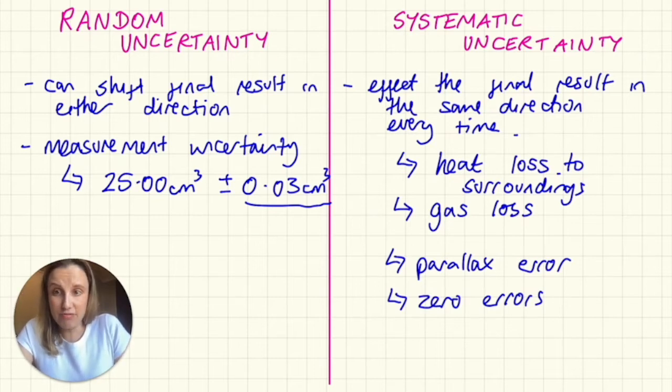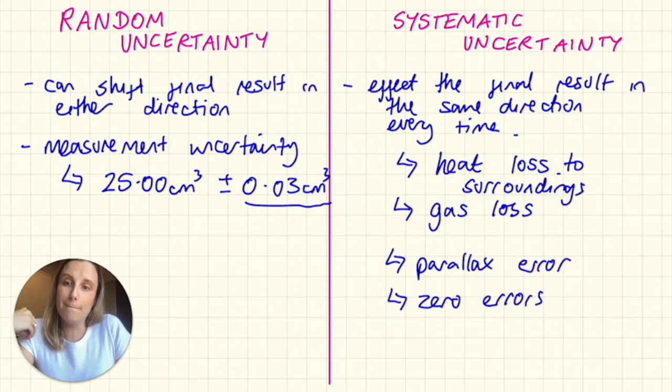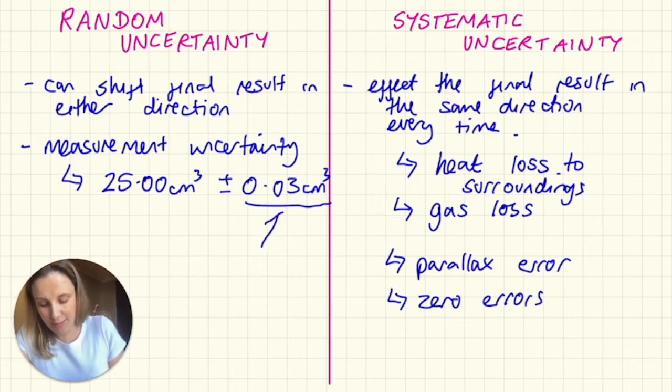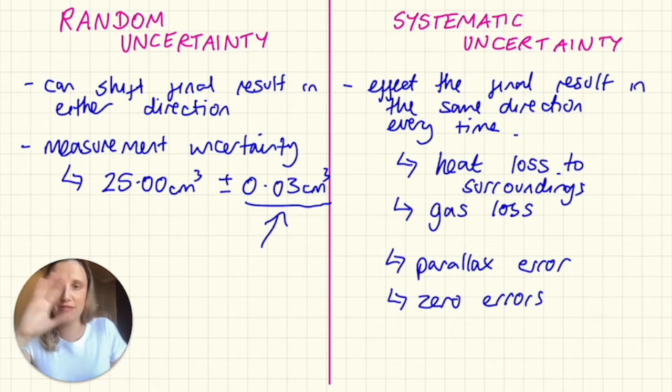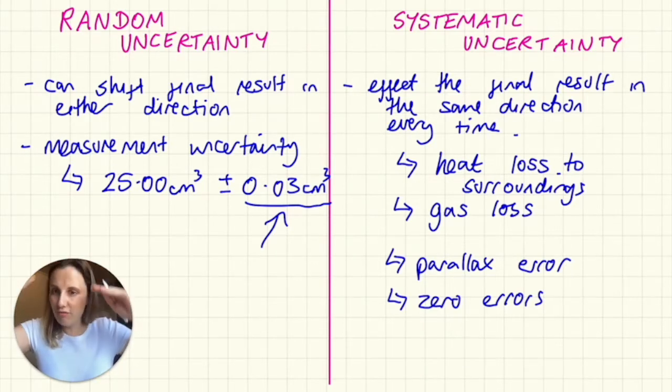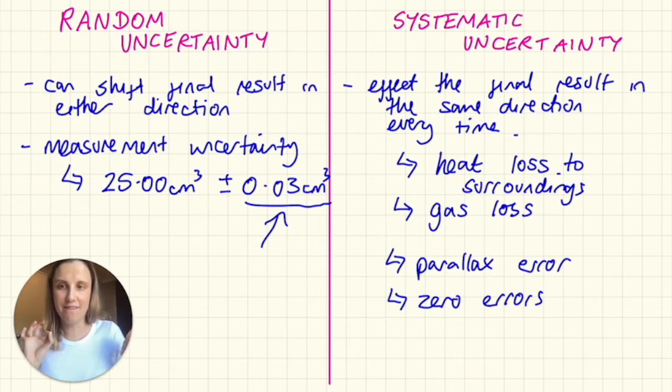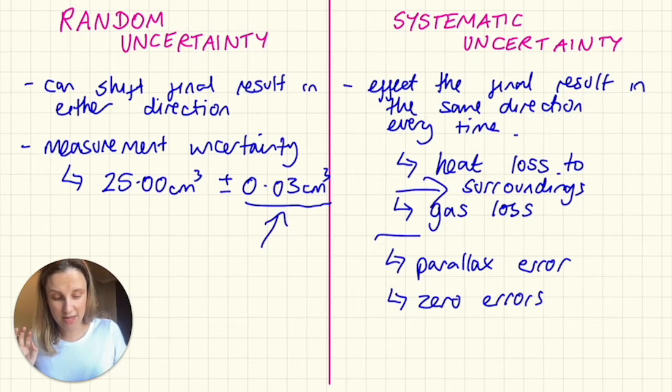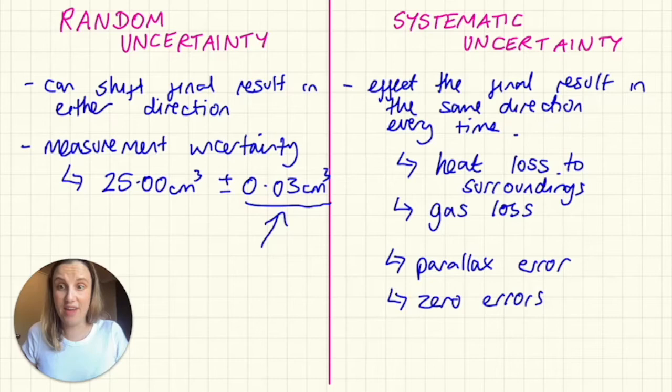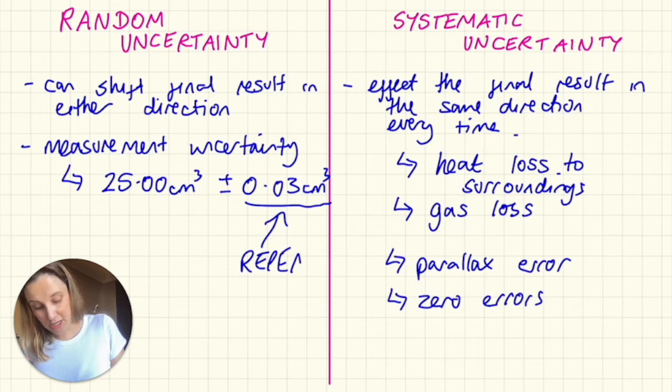The only way to minimize random uncertainties is to do more repeats. Because the more repeats you do, you're going to end up cancelling out that 0.03 above and below, because everything repeated should average out at a nice value. If you repeat something, you're never going to reduce these things, the heat loss and the gas loss. You can repeat it all day and you'll never solve those problems.